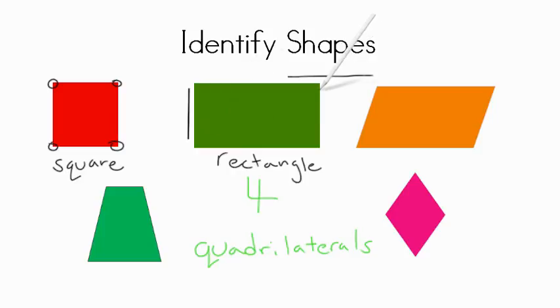...is equal to this side over here. This side right here is equal to this side right here. It also has right angles.